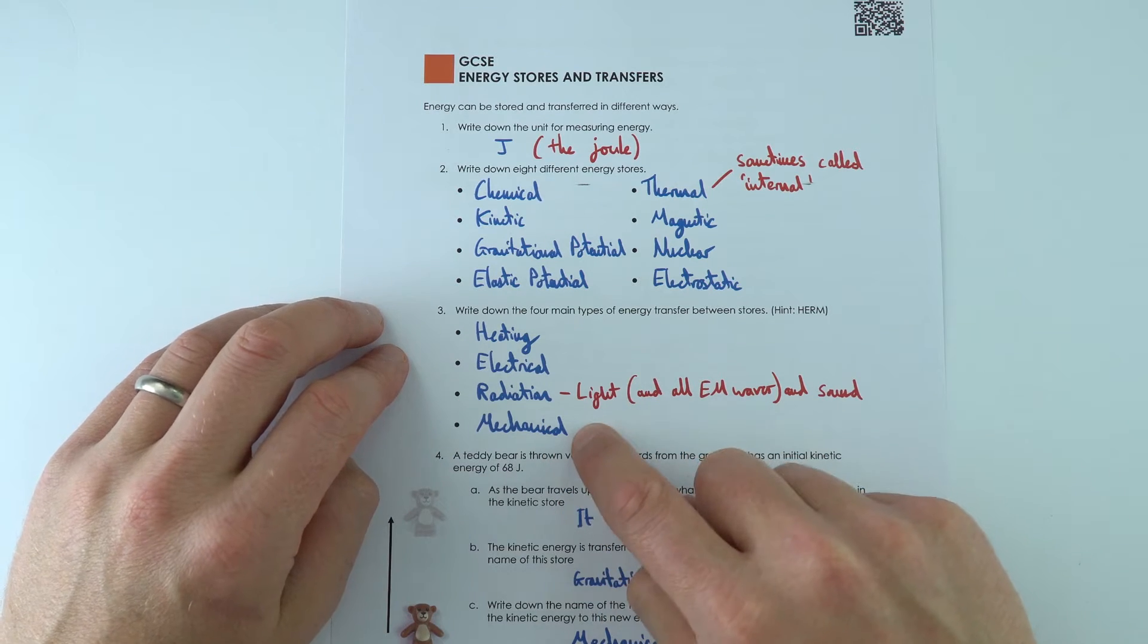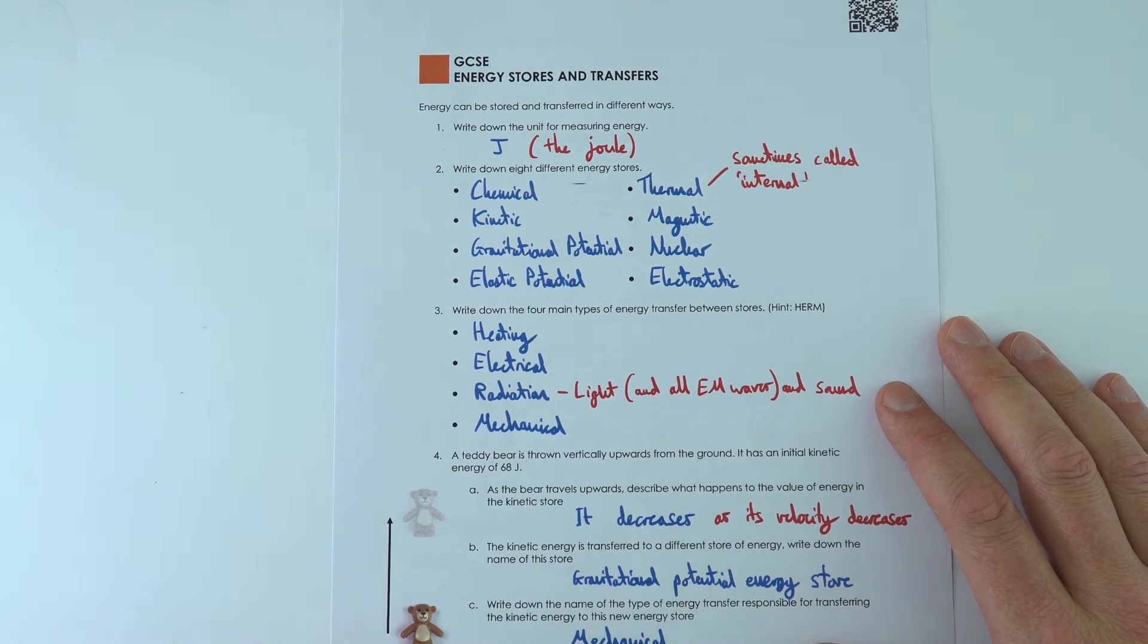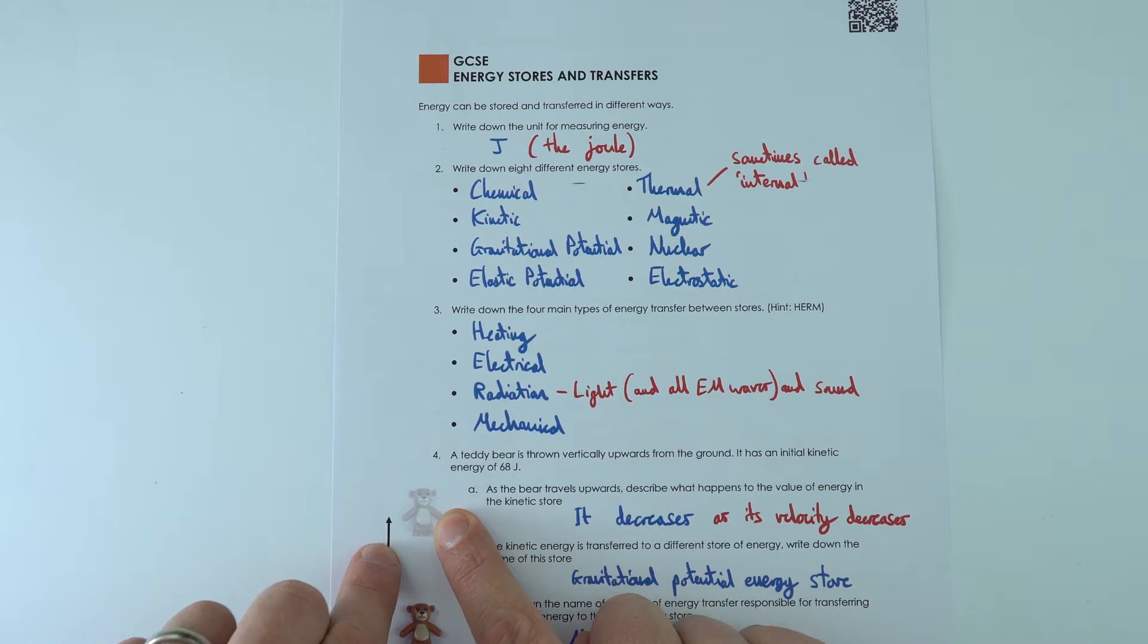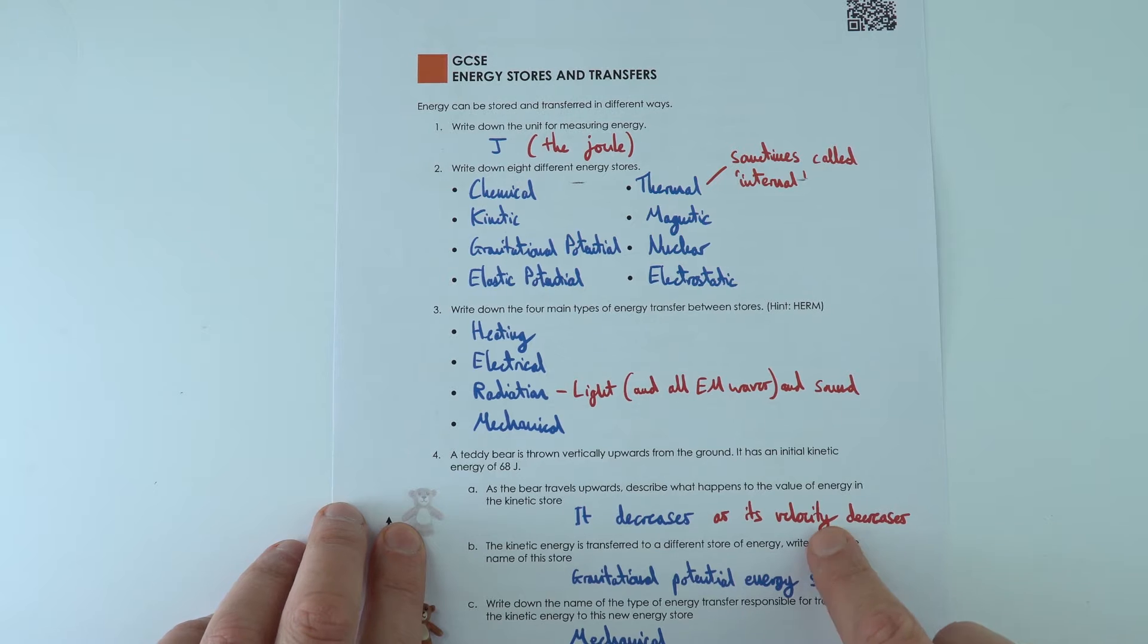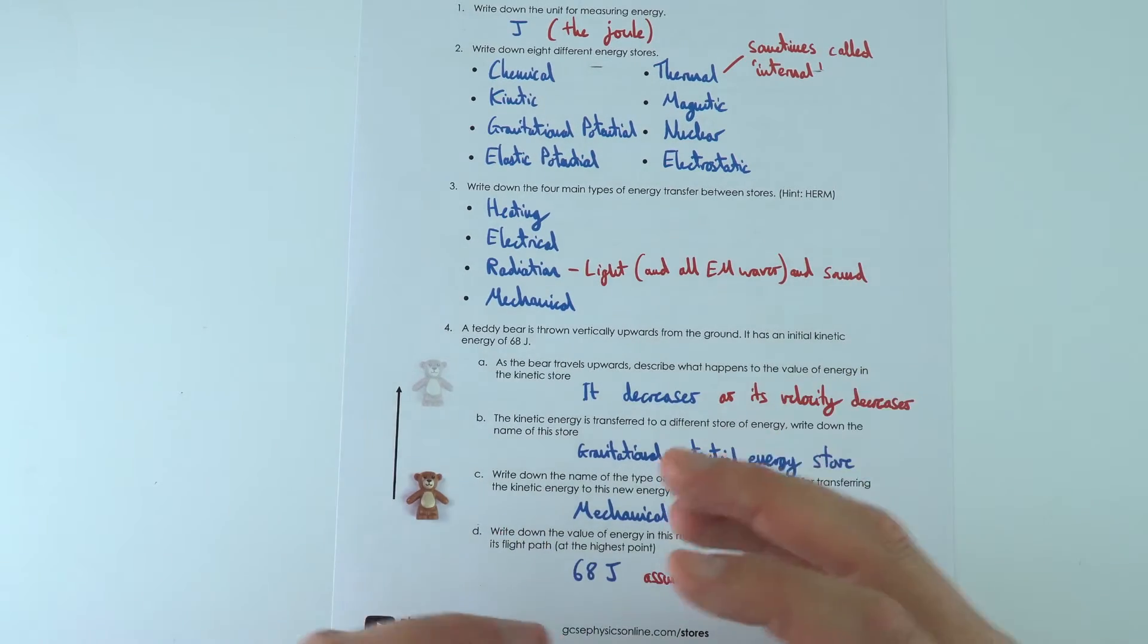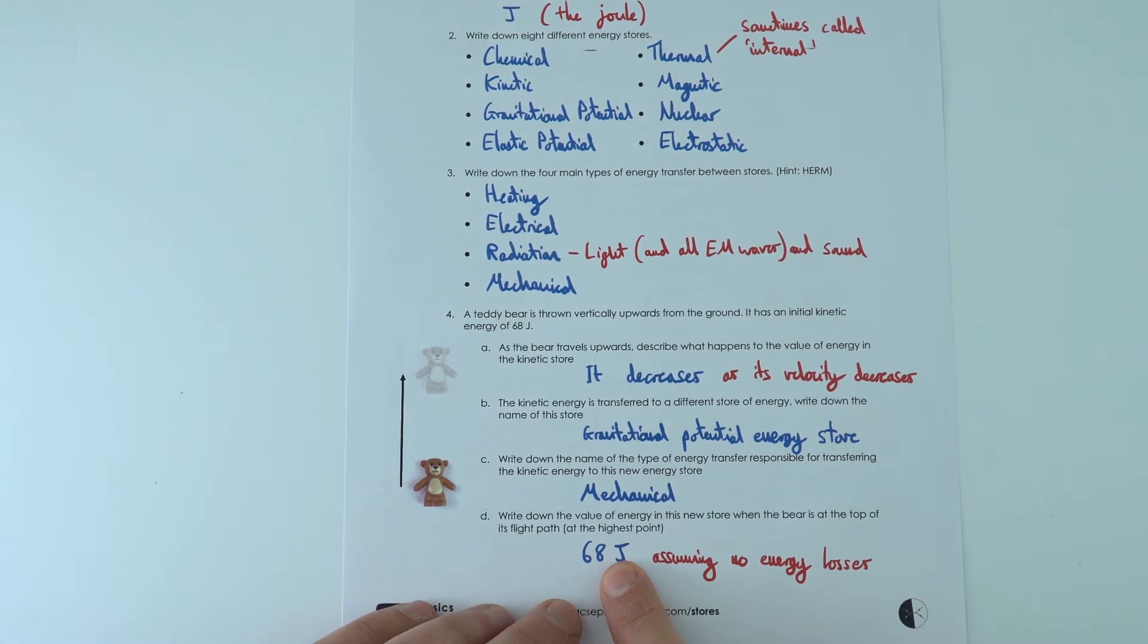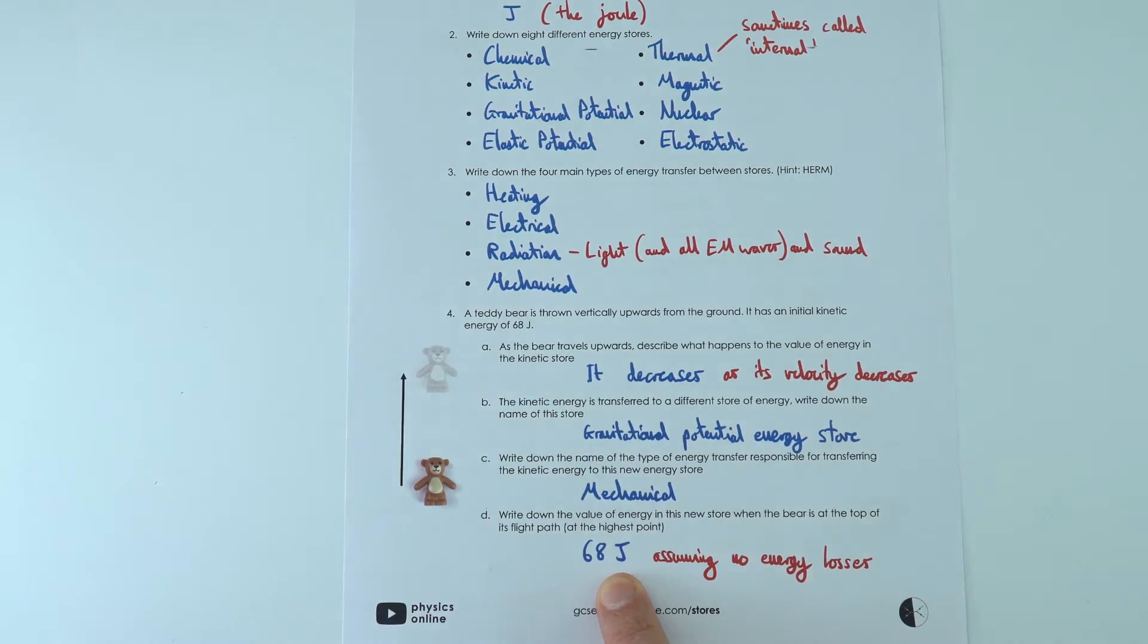Mechanical is often the most common type of energy transfer. So if we think about something being thrown in the air, as the gravitational potential store increases as it gets higher, this is because the kinetic energy store decreases. It starts out quickly, it slows down, and as it slows down because the velocity decreases, so does its kinetic energy. And assuming that there's no energy losses because energy can't be created or destroyed, all of the 68 joules of kinetic energy are transferred to 68 joules of gravitational potential energy at the end of that first part of the process.